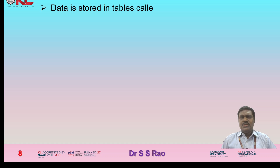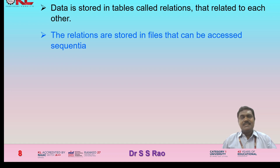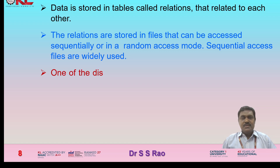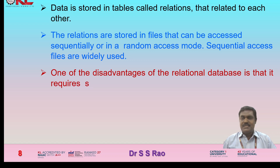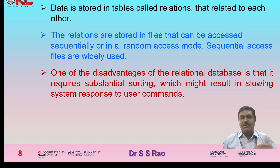Data is stored in tables called relations that are related to each other. The relations are stored in files that can be accessed sequentially or in a random access mode; sequential access files are widely used. One of the disadvantages of the relational database is that it requires substantial sorting, which might result in slowing system response to user commands.